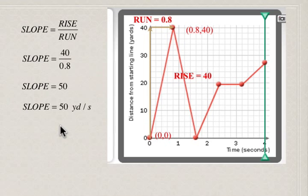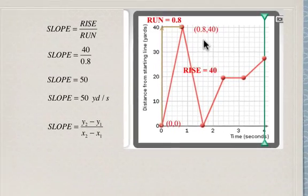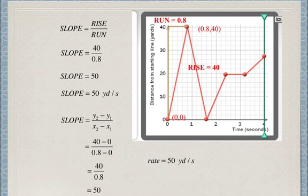We can also use the slope formula y2 minus y1 over x2 minus x1. That gives us 40 minus 0 over 0.8 minus 0, which again comes out to be 50 yards per second. Remember that slope is rate — it is a measurement of some sort of rate.